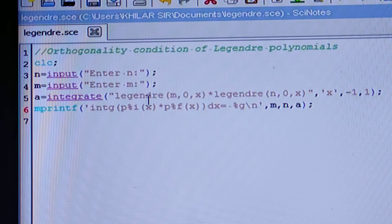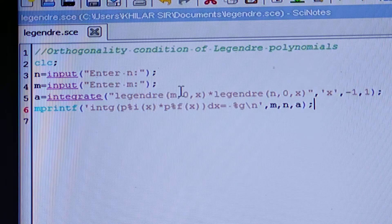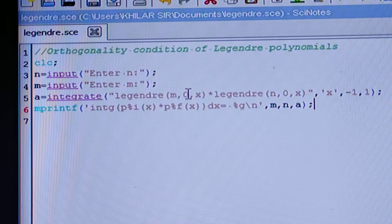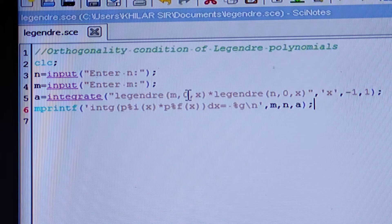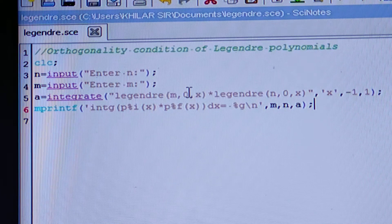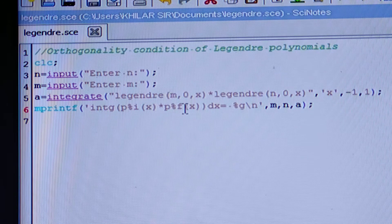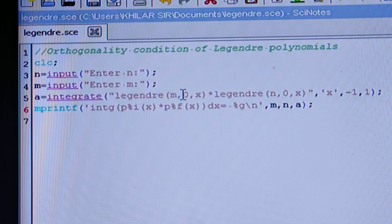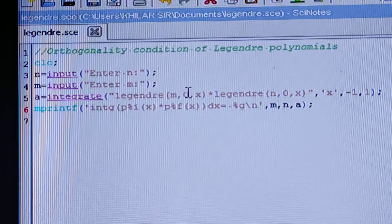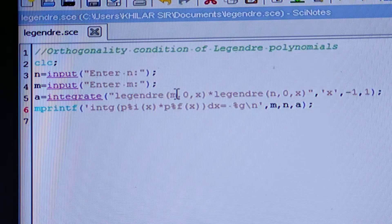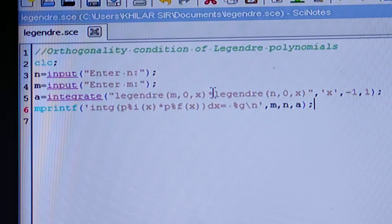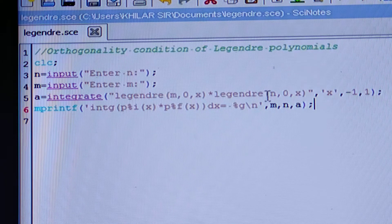Then A is equal to integrate. The Legendre - see here the coding is legendre(M, 0, X). We are giving 0. Why we are writing 0? Actually, in associated Legendre polynomial you have to give both the values M and N, but here we are simply dealing with Legendre polynomial, not associated Legendre polynomials. So that is why in place of both values we are considering one, so we should give 0. So M comma 0 comma X multiplied by legendre N comma 0 comma X. And legendre should be written in small L, not in capital L.